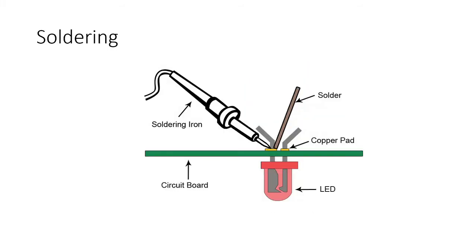Soldering works in a similar way to brazing. Soldering irons typically reach about 375 degrees. You make the surface nice and shiny, add a little solder to the tip to help heat transfer, then hold the iron on the component you want to solder. The technique is to hold it on the area for about 10 seconds and then apply solder, which creates a small pool that completes the joint.